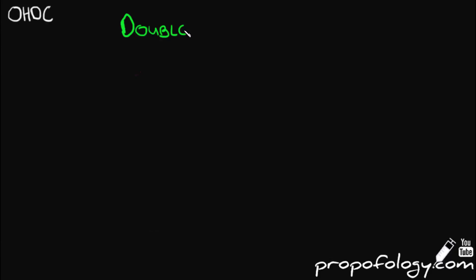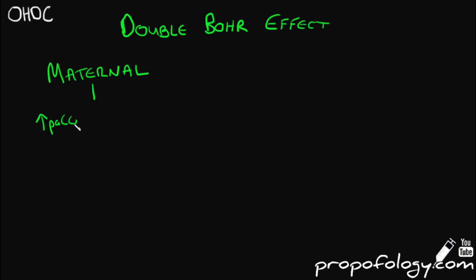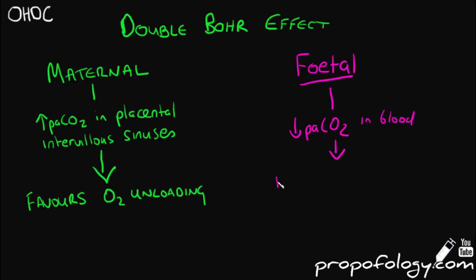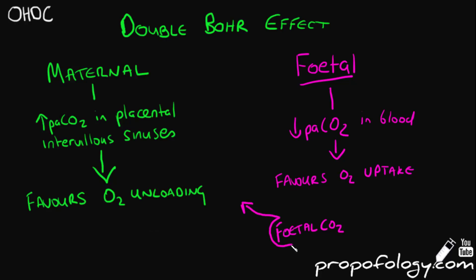The double Bohr effect refers to the situation in the placenta where the Bohr effect operates in both the maternal and the fetal circulations. The increase in PCO2 in the maternal intervillous sinuses assists oxygen unloading, while the decrease in PCO2 on the fetal side of the circulation assists oxygen loading. The Bohr effect facilitates the reciprocal exchange of oxygen for carbon dioxide, meaning the oxygen dissociation curves for maternal HbA and fetal haemoglobin move apart — a right shift for maternal and left shift for the fetus. The maternal side favours oxygen unloading to the fetus, and the fetal CO2 goes to the mother.